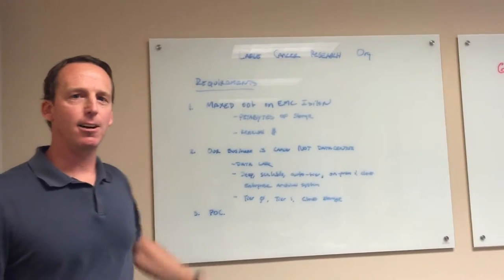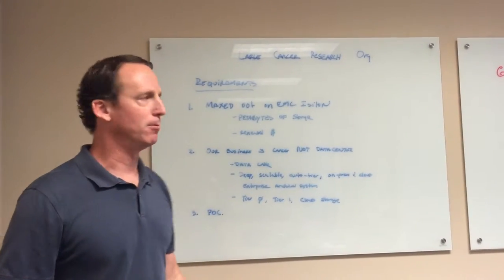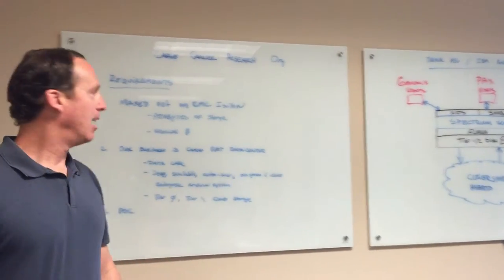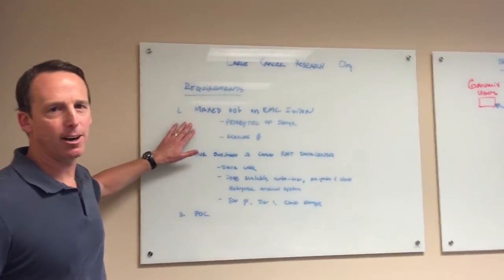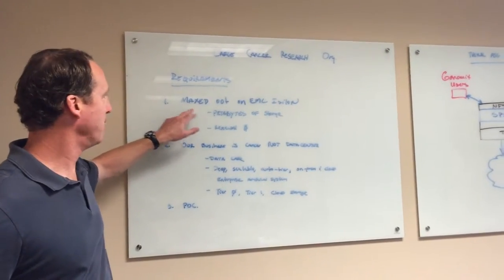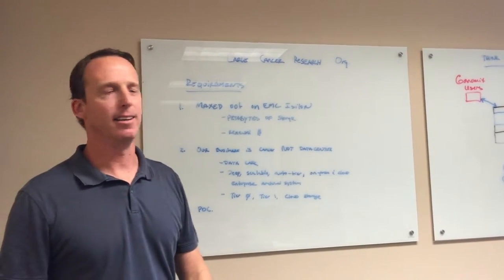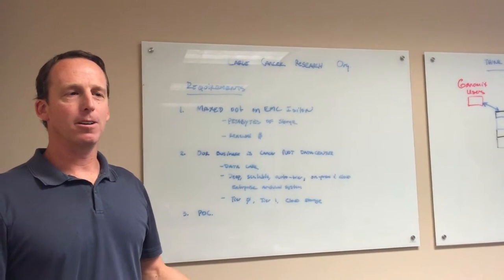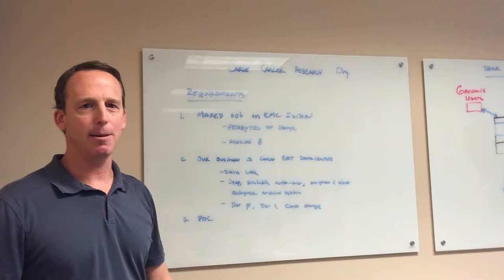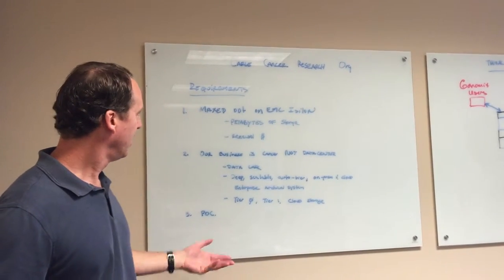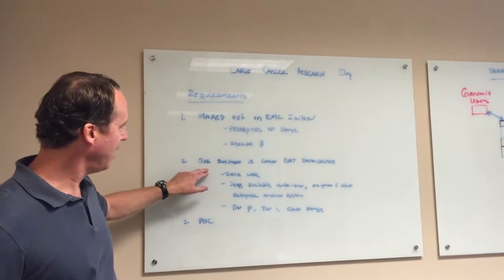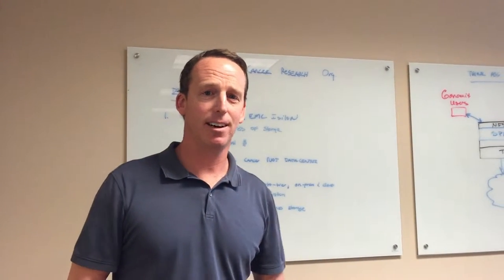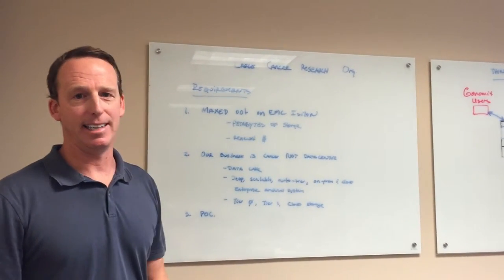We met with the CTO and lines of business from Genomics, PACS Imaging, and General Archive. Their problem is that they've maxed out on their EMC Isilon storage. They have petabytes of storage and are looking to avoid the big renewal that's coming up. As they said to us, they want to focus on cancer, not on running the data center.